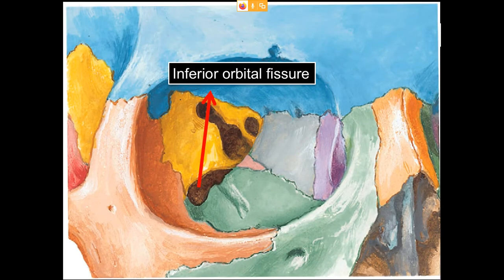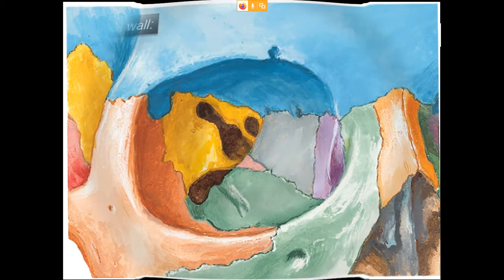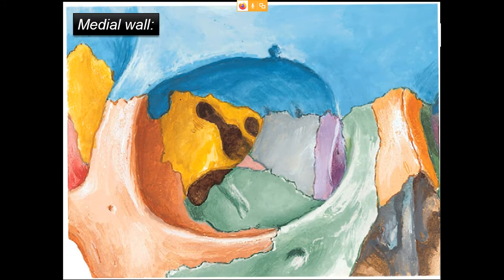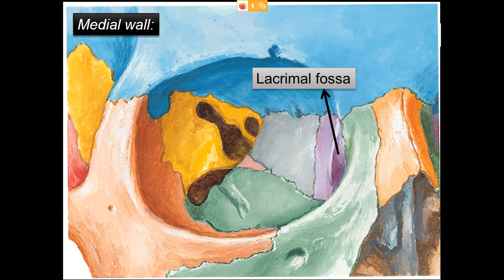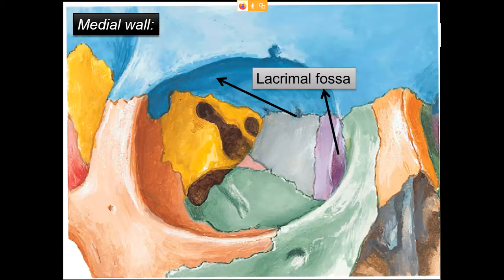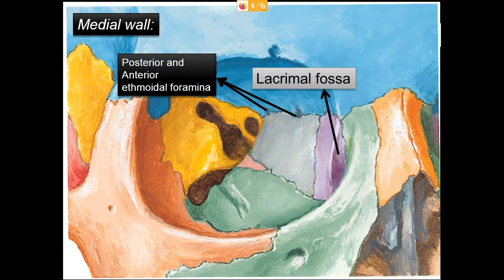Here the inferior orbital fissure is shown — sometimes the inferior ophthalmic vein passes through this fissure. Coming to the medial wall: from anterior to posterior, it is contributed by the frontal process of the maxilla, then the lacrimal bone, then the ethmoid bone — with the lacrimal fossa contributed by the lacrimal bones.